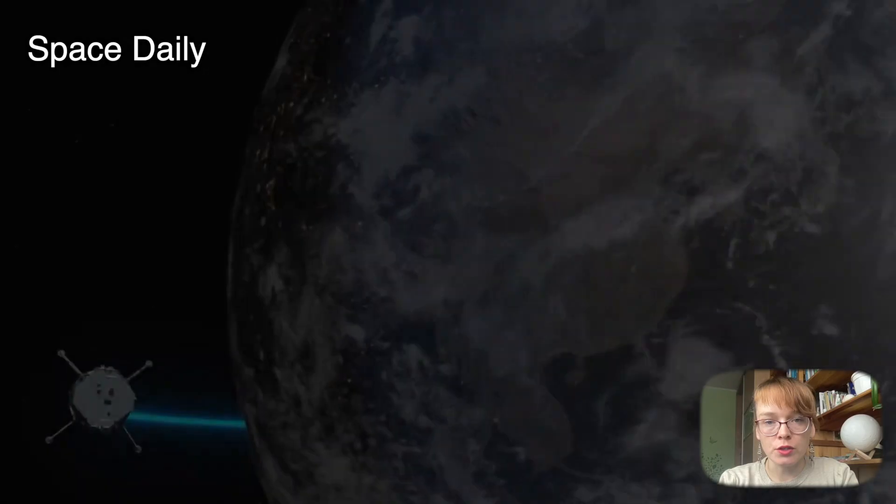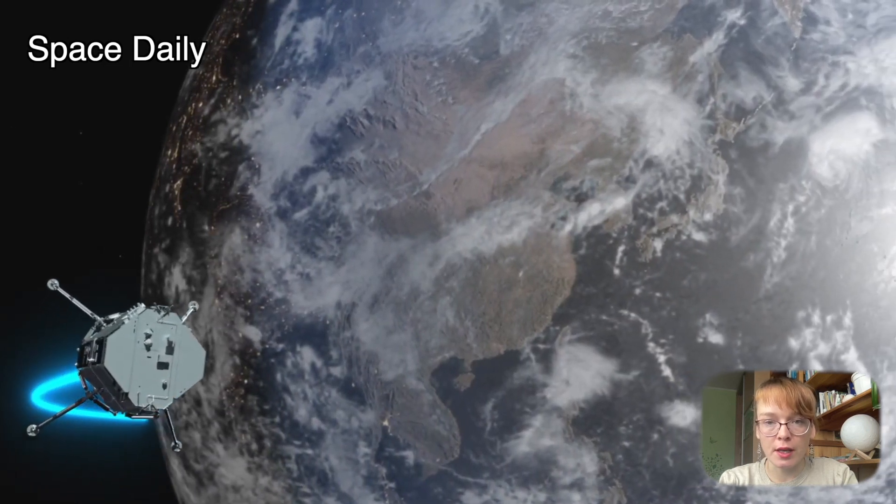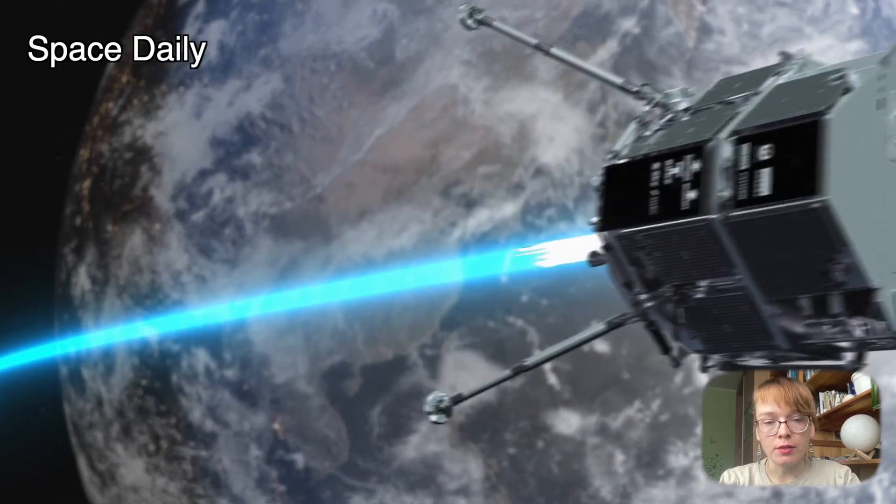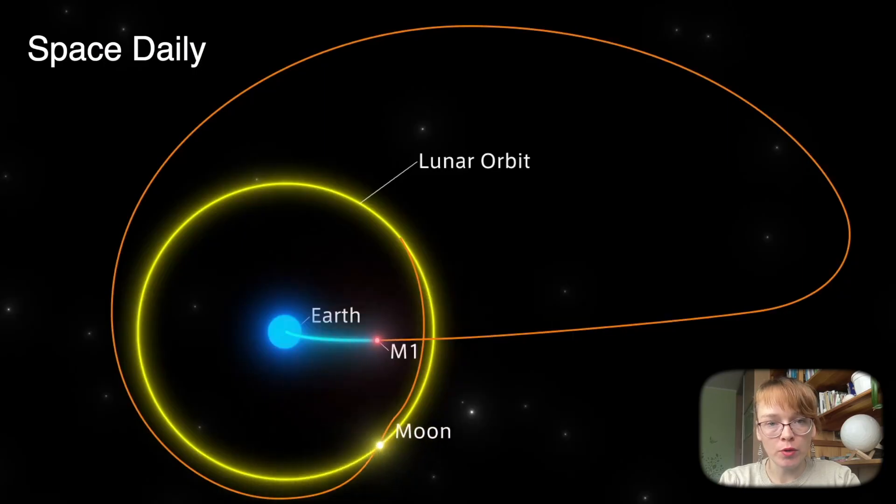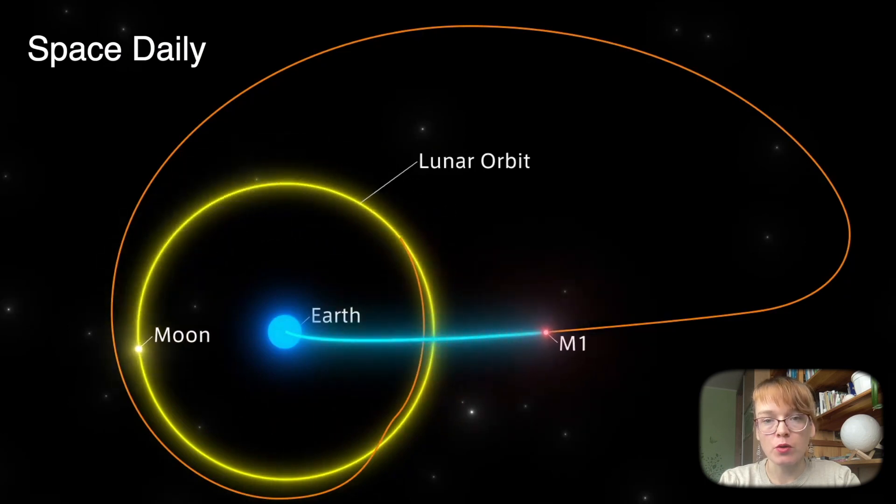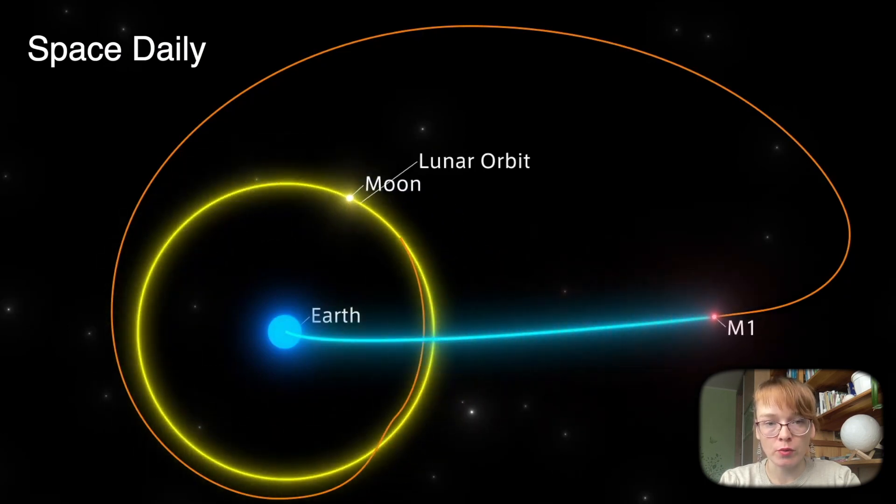Hakuta R-Mission-1 launched in December on a SpaceX Falcon 9 rocket, taking a low-energy trajectory that took it 1.4 million kilometers away from Earth before turning back toward the Moon.